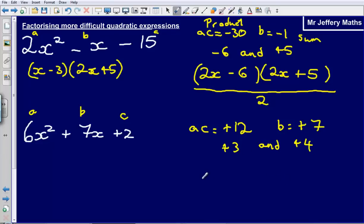I need to put those numbers into double brackets. So in this case I've got 6x squared, so I'm going to start off my bracket, 6x and then put the number in plus 3. And then the other bracket, 6x and plus 4. And I'm dividing this by my coefficient for x squared, my 6, so I'm dividing it all by 6.